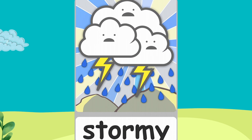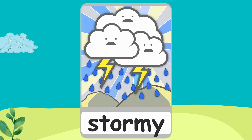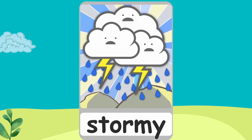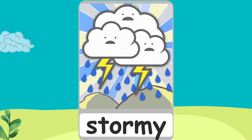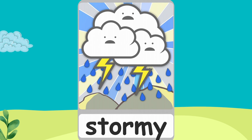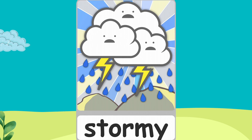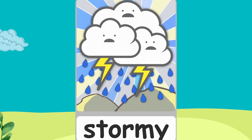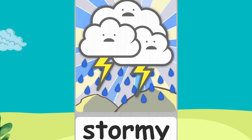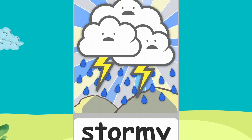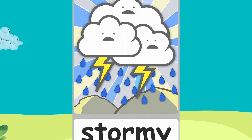Stormy. What does stormy mean? It's very bad. Yeah, it looks bad, right? Stormy means when all the clouds are too full of electricity and water, sometimes it starts to rain so hard that the clouds have some electricity. It starts to hit lightnings on the floor. That's why it's called stormy.